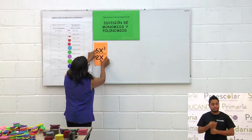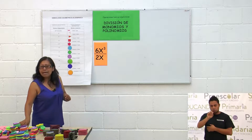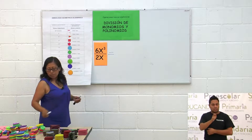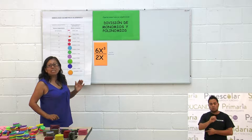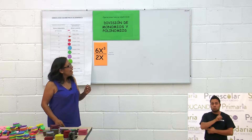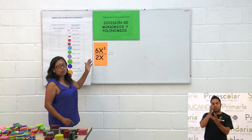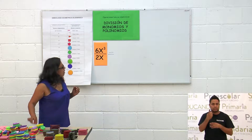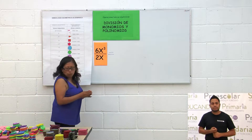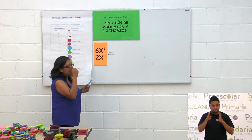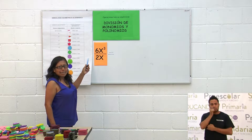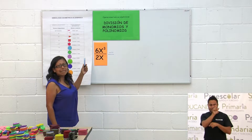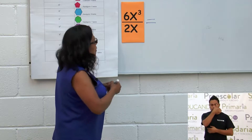Aquí tenemos una división de monomio entre monomio. Recordemos que monomio es cuando una expresión algebraica consta de un solo término. Para hacer este problema, primero dividimos los coeficientes, es decir, los números: 6 entre 2 es 3.